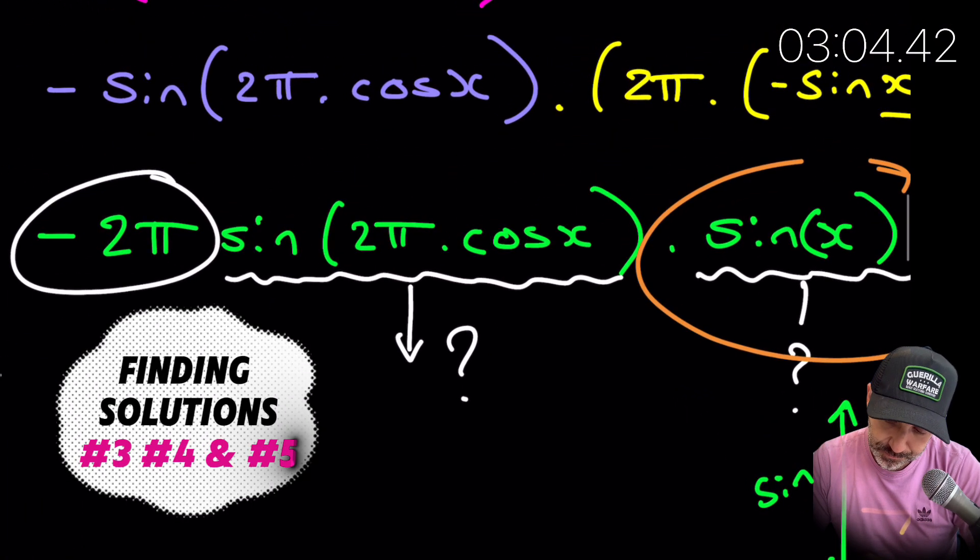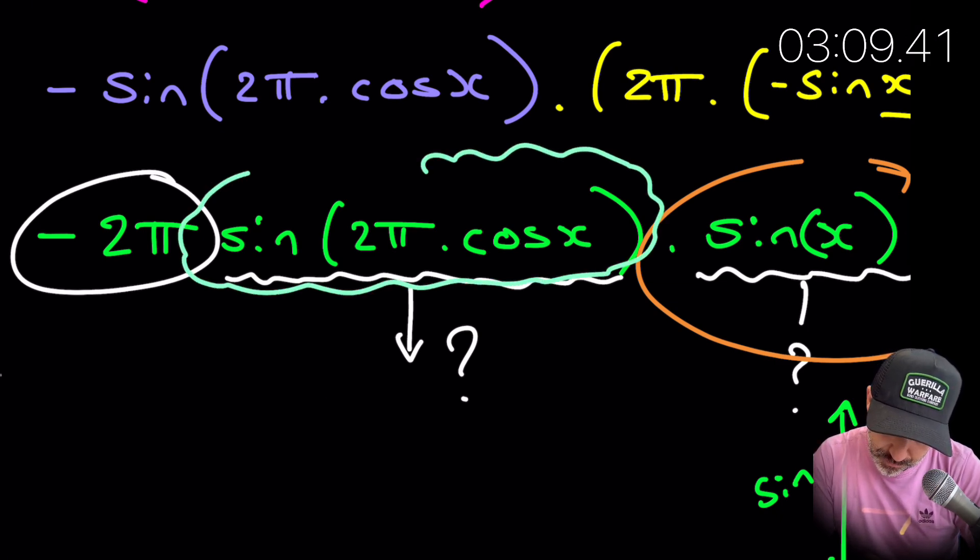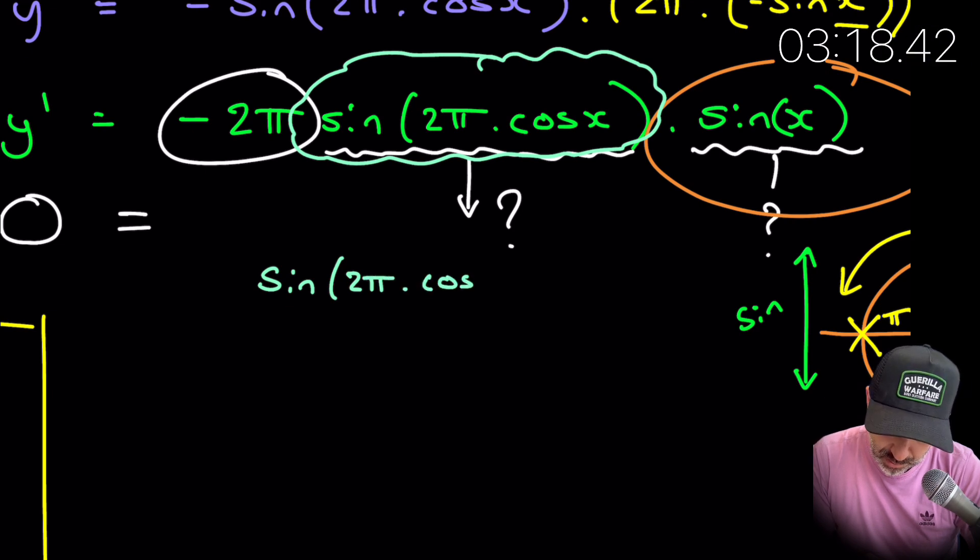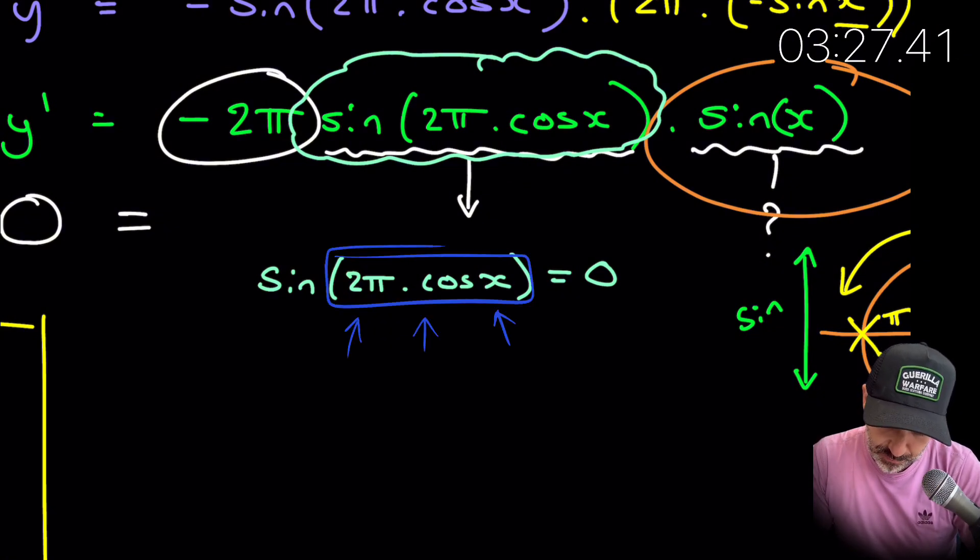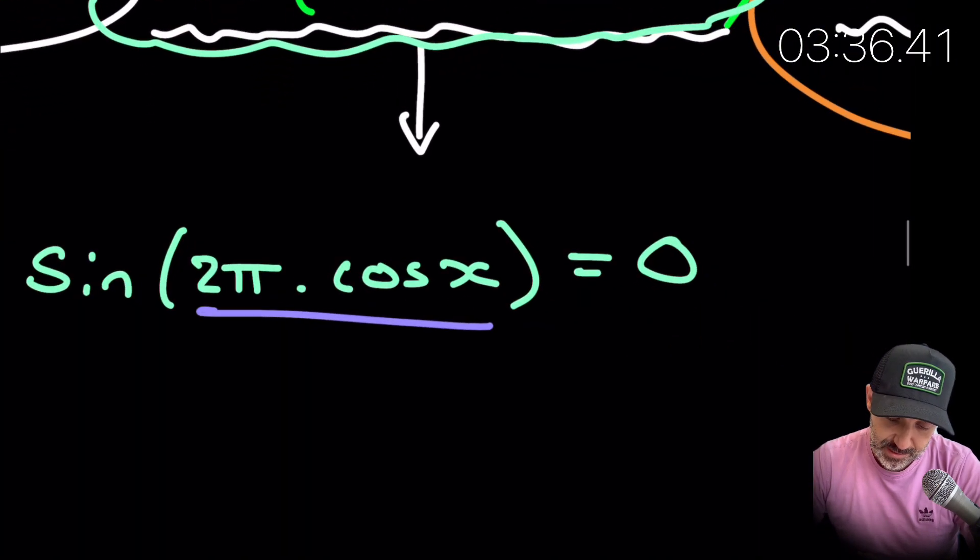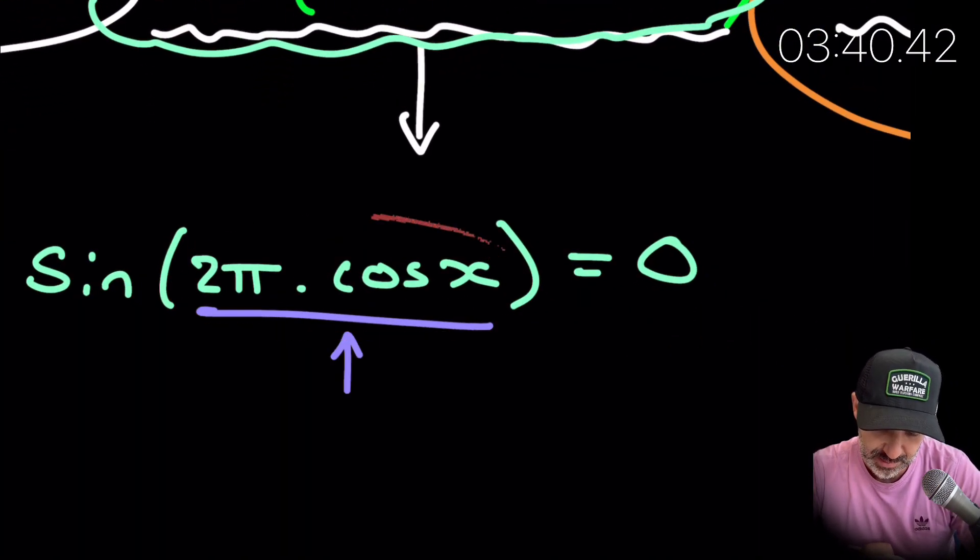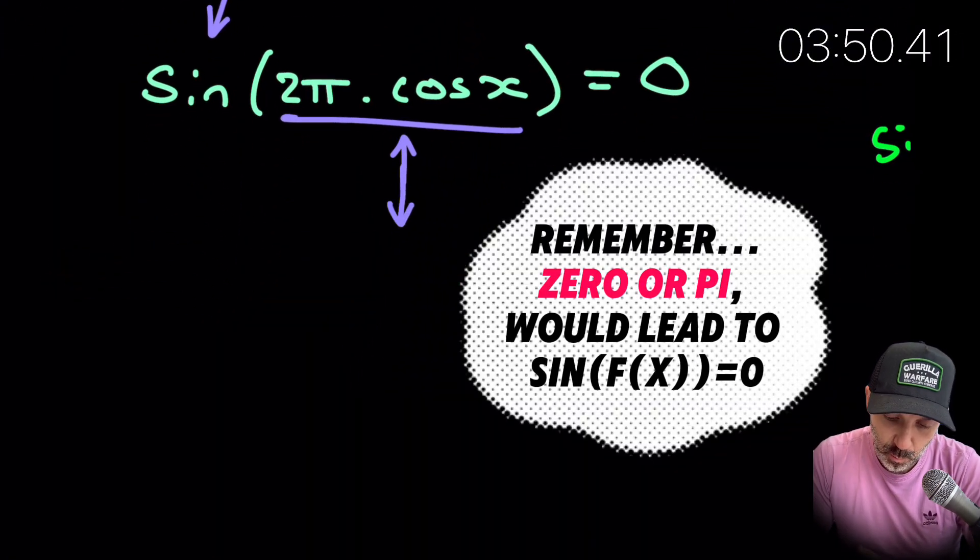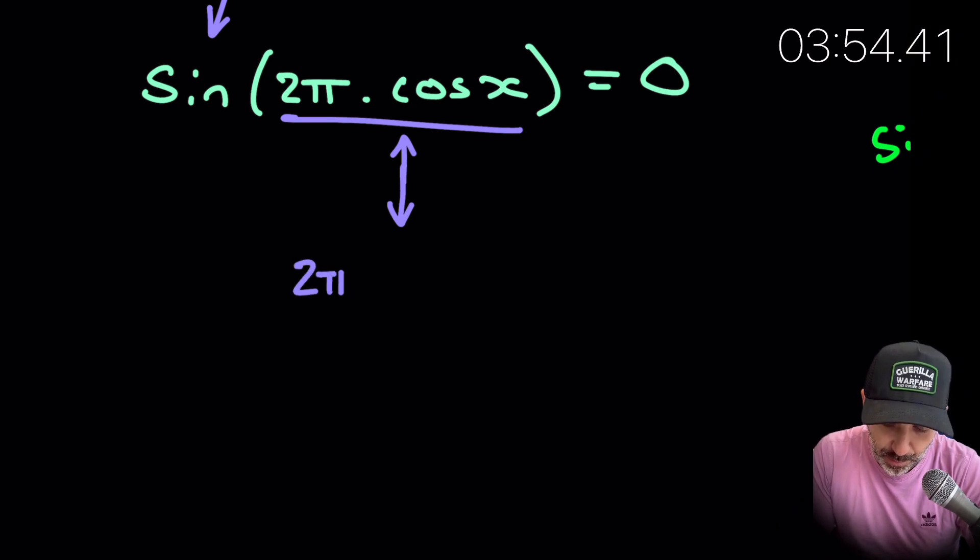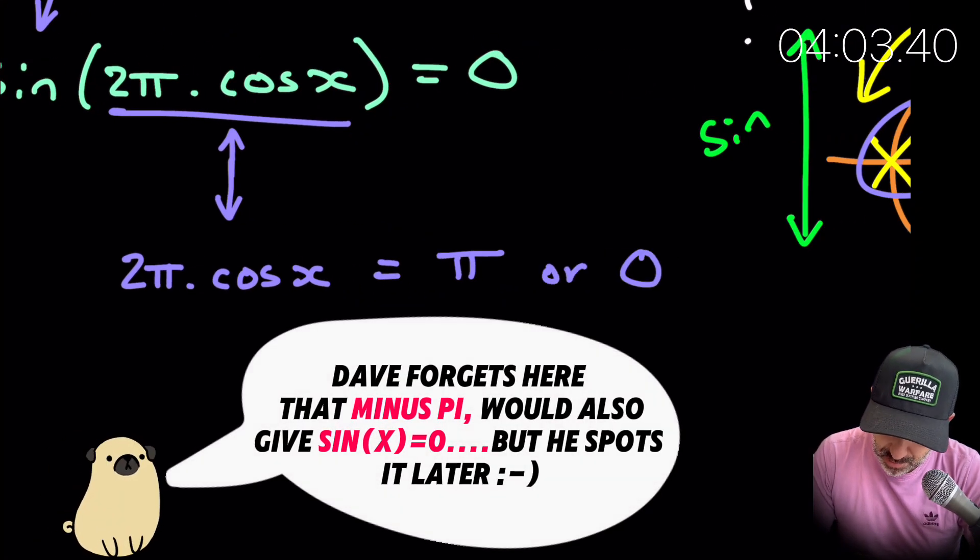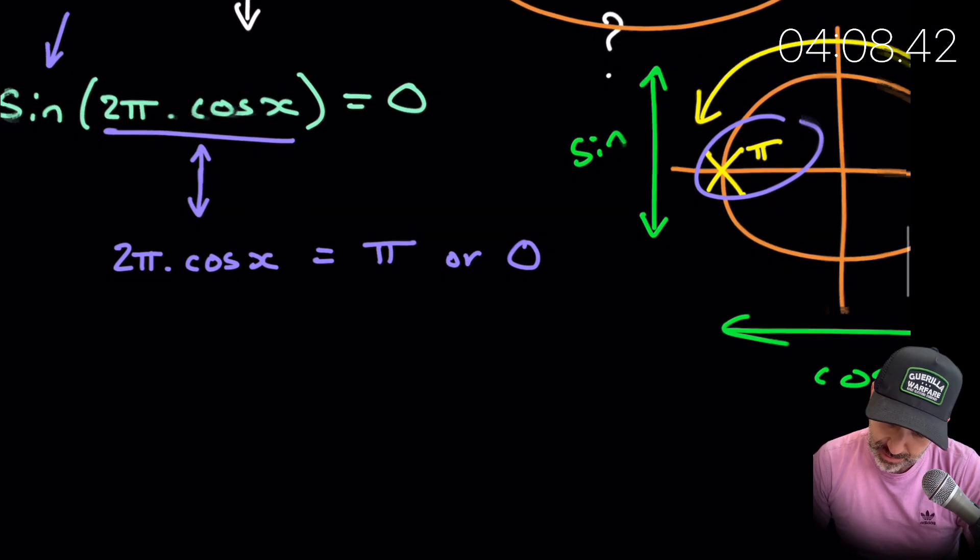Okay. So let's go over to this part here now, which I will circle in this little cloud. So when is this value equal to zero? So we need sine 2π times cos x to equal zero. Okay. That is what we need. So this is one of the solutions. So again, we need the center of this thing here to equal either zero or π, right? Because if the center here, what I've just sort of underlined, if that is equal to zero or that is equal to π, that means sine of that value will equal zero.